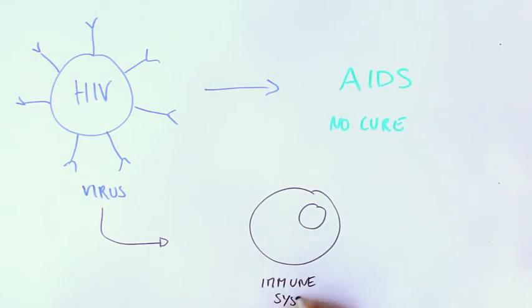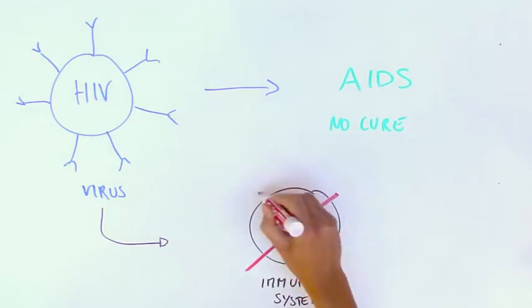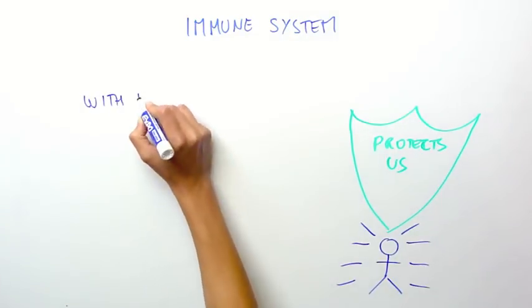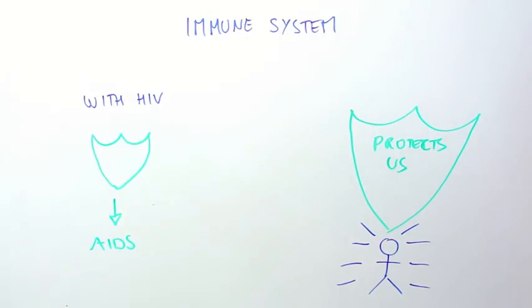The HIV virus gets into cells of our immune system and kills them. Because our immune system protects us from harmful agents, individuals with HIV have a weakened immune system and eventually develop AIDS.